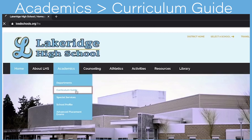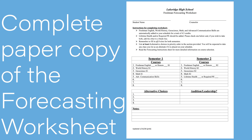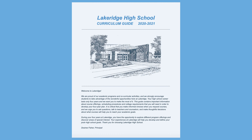Here are the steps you need to follow. First, complete the paper copy of your forecasting worksheet using the forecasting course list. Please be sure to use the sheet for the grade level you will be in next year. Reference the online curriculum guide if you have any questions about a course. Please be sure to choose alternate choices too, and if you're going to choose study hall, please make sure to write that in the notes column.